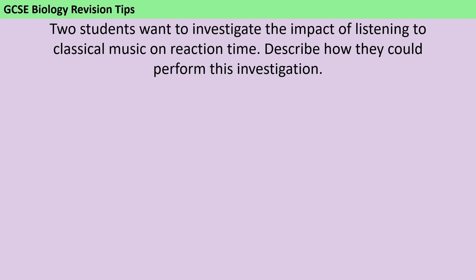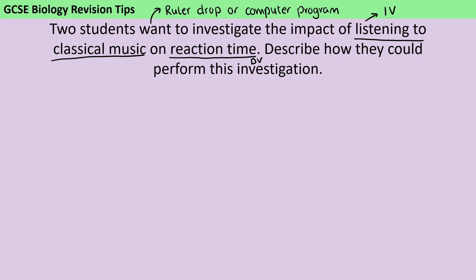Here, our independent variable is whether or not you're listening to classical music, so at some point you're going to need to say repeat the investigation but this time listen to classical music. The dependent variable is going to be the reaction time. For any question that asks you to write a method, I would strongly suggest going for a numbered list, because when you need to say repeat and change something, you can say 'repeat steps one to five' — that's just a bit less unwieldy.